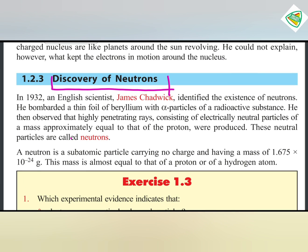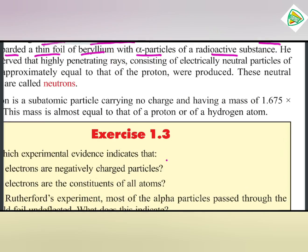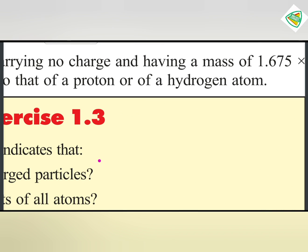In 1932, an English scientist James Chadwick identified the existence of neutrons. He bombarded beryllium foil with alpha particles of a radioactive substance.